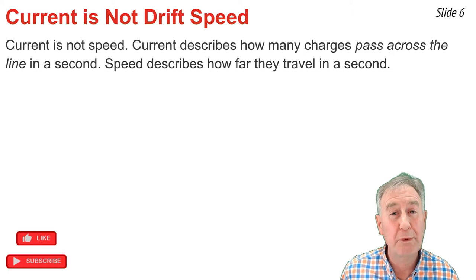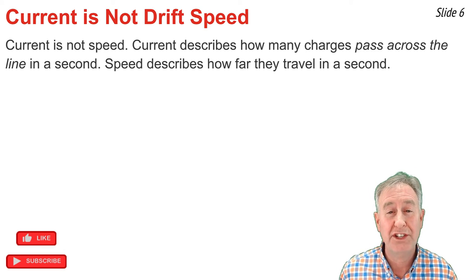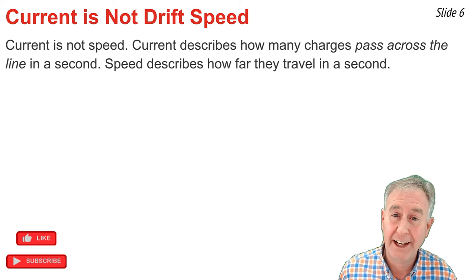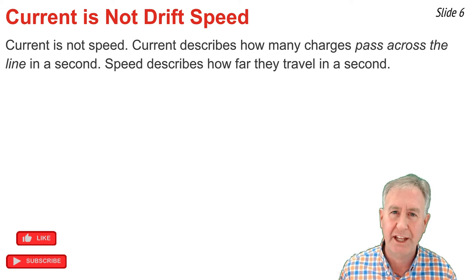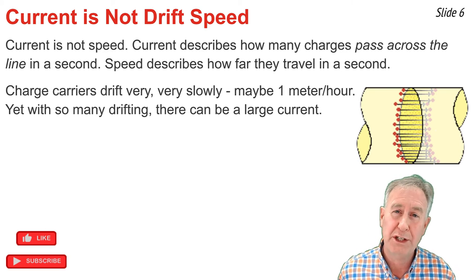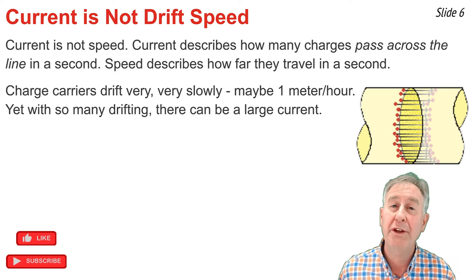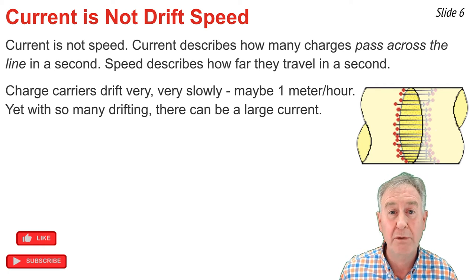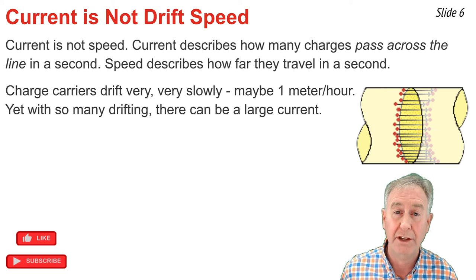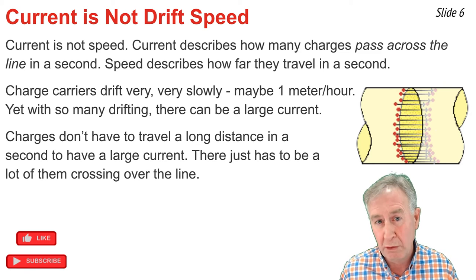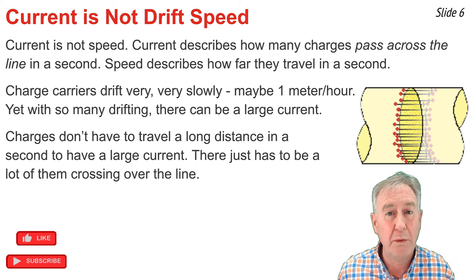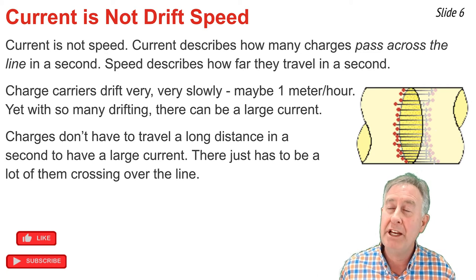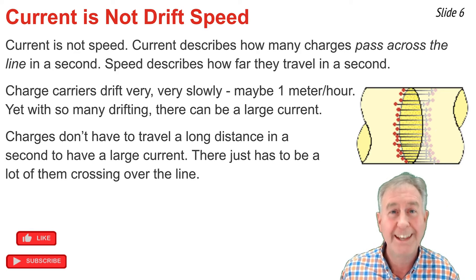Be careful to not confuse current with drift speed. Current refers to the number of charges that pass by a point in a second of time. Drift speed refers to how fast the charges are moving, the distance they travel in a second of time. The drift speed of charges within a circuit is very, very slow, on the order of about a mile per hour. Yet, with so many charges drifting, you could have many of them cross a point on the circuit in a second of time. You don't need to have charges moving large distances to have a large current. You just need to pack the charges very densely within the wire, lined up next to that point, so that many of them cross that point in a second of time.